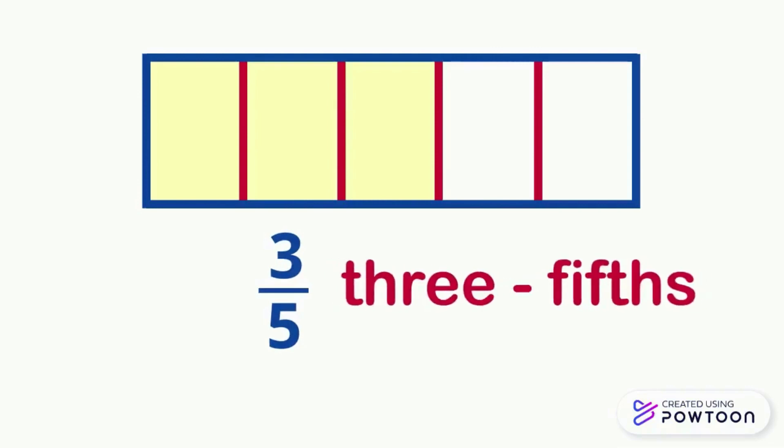Now, we have divided a rectangle into five equal parts, and colored three parts. The fraction of the colored part is 3 over 5, and we read it three fifths.